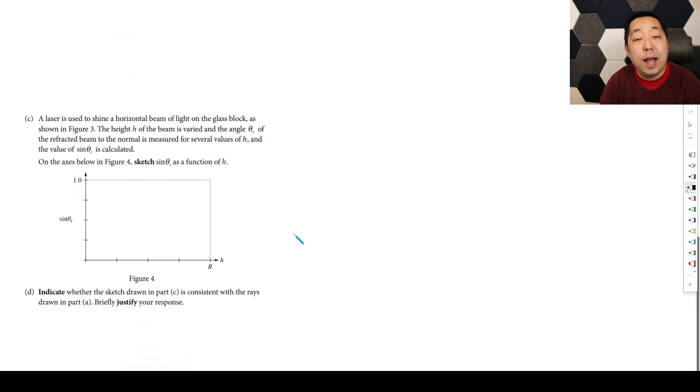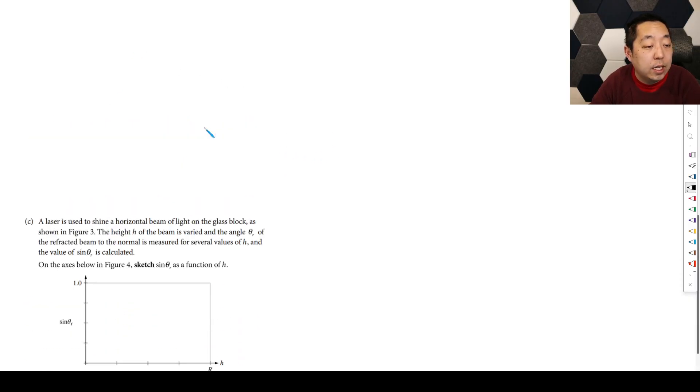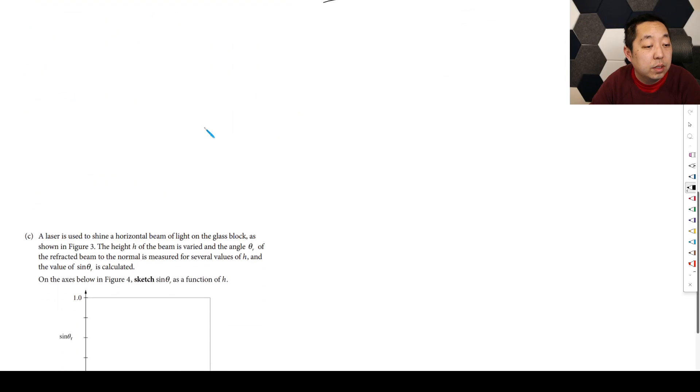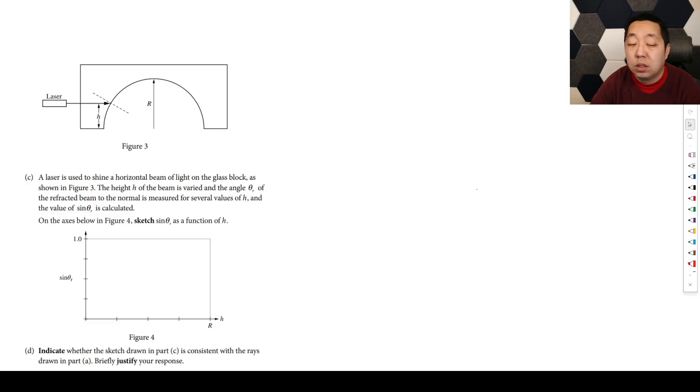Okay, then we've got to sketch a graph. That's the third part of the TBR question. A laser is shooting a horizontal beam of light on the glass block. The height h of the beam is varied and the angle theta of the refracted beam to the normal is measured for several values of h. So we want to find the sine theta r as a function of h.